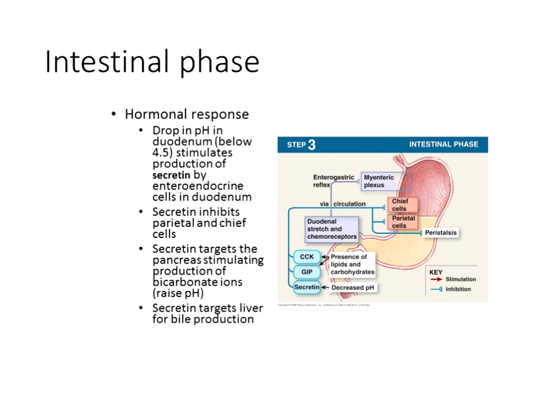In the intestinal phase, the duodenum begins accepting boluses of food so that absorption can start. Because the chyme arriving from the stomach has a relatively low pH, the small intestines must prepare for that acidity by producing a lot of mucus as a barrier and buffers to bring the pH back toward normal levels. Hormones stimulate intestinal glands and cells to amp up their secretions, while simultaneously inhibiting secretions from the stomach.